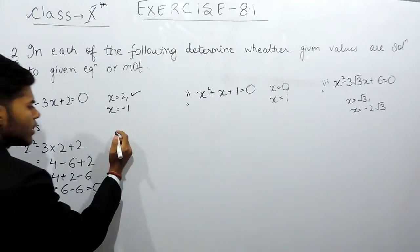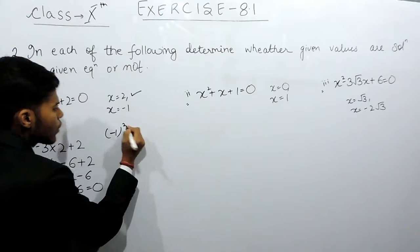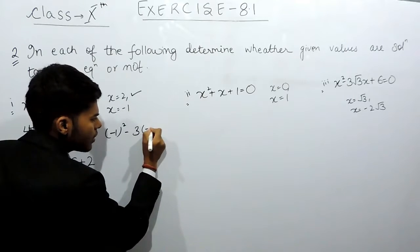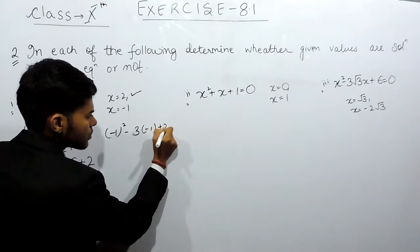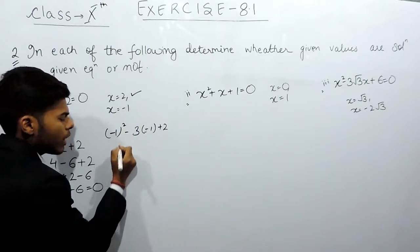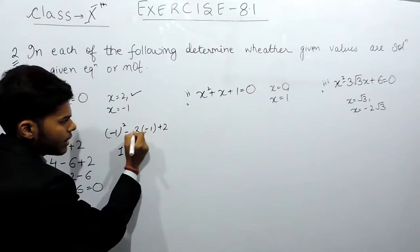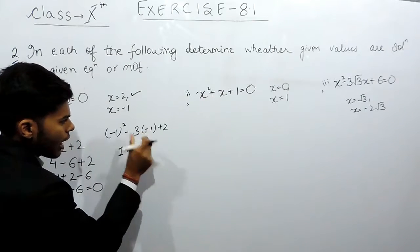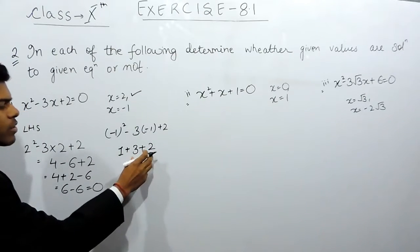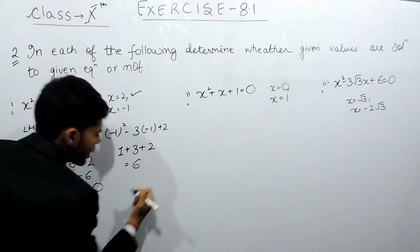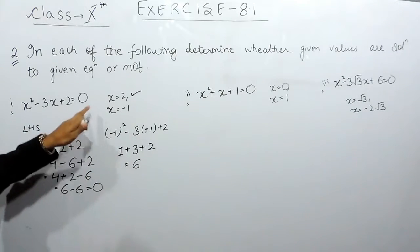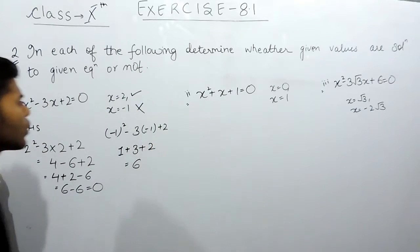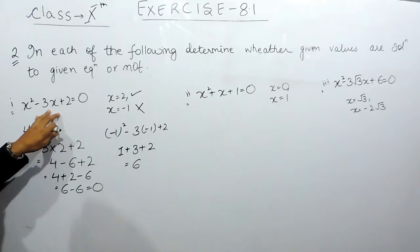Now on keeping x equals to minus 1, this will be minus 1 whole squared minus 3 multiplied by minus 1 plus 2. Minus 1 to the power 2 gives us 1, minus 3 multiplied by minus 1 equals plus 3, and plus 2. So 3 plus 2 is 5, and 5 plus 1 is 6. Left hand side is not equal to right hand side, which means x equals minus 1 is not a root of this given quadratic equation.